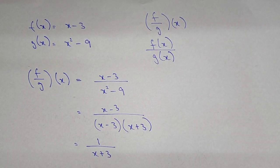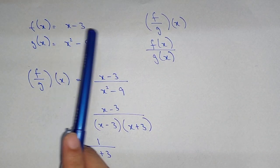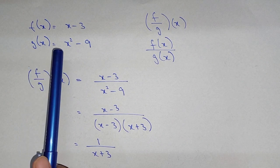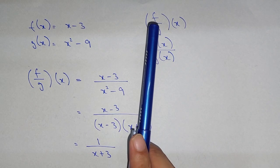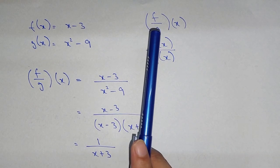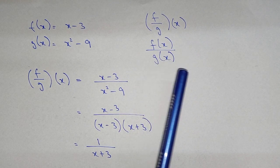Now here we are dividing the functions. So here we have f of x equal to x minus 3 and g of x equal to x square minus 9. So the notation for dividing the function is f over g of x, or f of x divided by g of x.